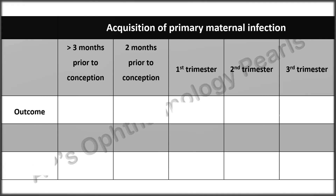The rates of fetal transmission depend on the stage of gestation at which primary maternal infection occurs. There are no reports of congenital toxoplasmosis when maternal infection occurs greater than three months prior to conception, and only a few cases have been reported when infection was acquired two months prior to conception. Fetal transmission is low for maternal acquisition in the first trimester.